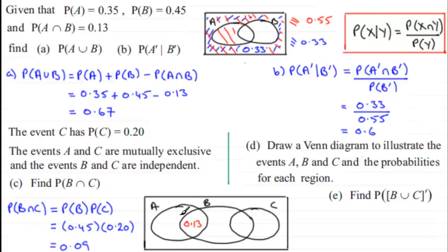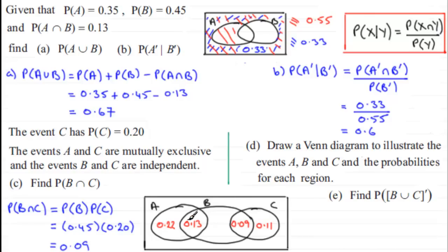The A-only region = 0.35 − 0.13 = 0.22. The B∩C region = 0.09. The C-only region = 0.20 − 0.09 = 0.11. The B-only region = 0.45 − 0.13 − 0.09 = 0.23.